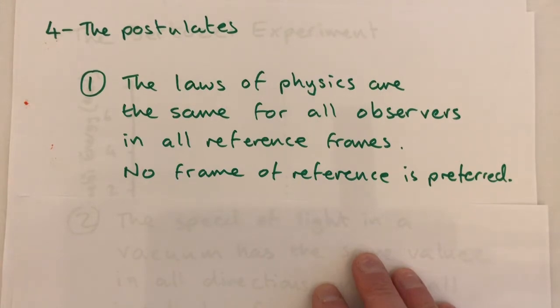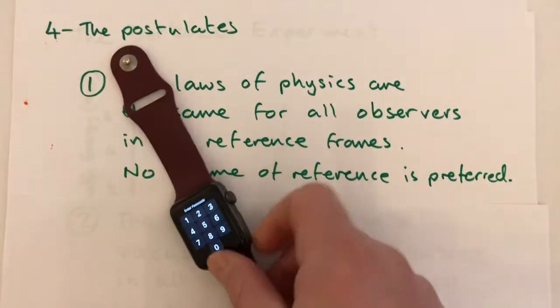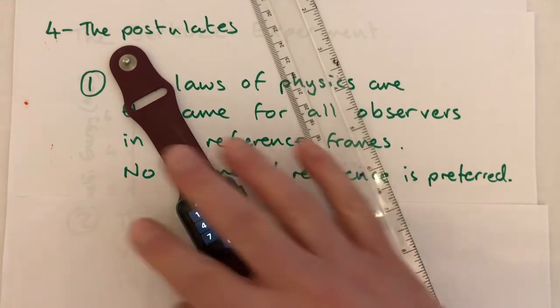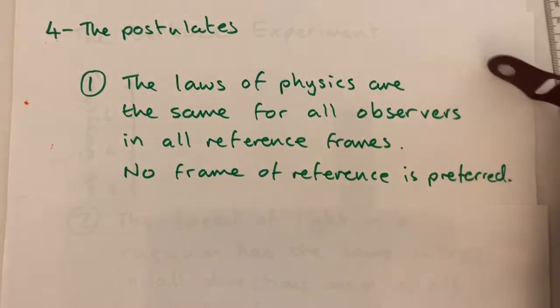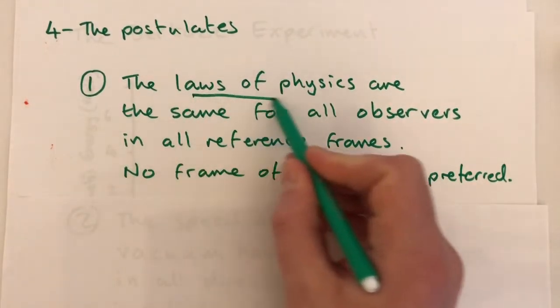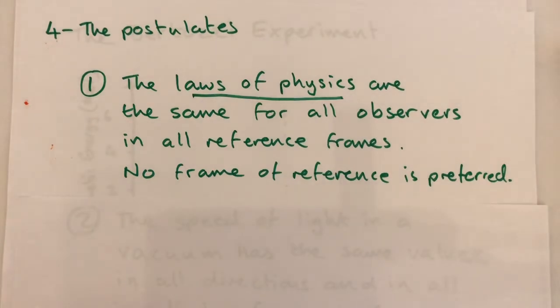The most important thing about Einstein's first postulate is not necessarily what it says, but more what it doesn't say. What it doesn't say is that the measured values for all physical quantities, which could include time and distance, are the same for all observers. In fact, most are not the same. It is the laws of physics that are the same, which relate these measurements to each other.